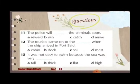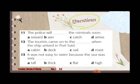Eleven: The police will ___ the criminals soon. A: reward, B: win, C: catch, D: arrive. Twelve: The tourists came onto the ___ when the ship arrived in Port Said. A: cabin, B: deck, C: sail, D: mast. Thirteen: It was not easy to swim because the sea was very ___.